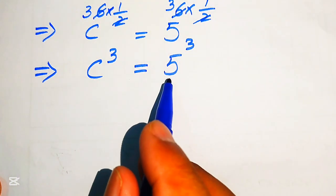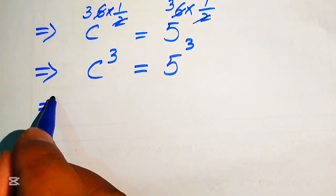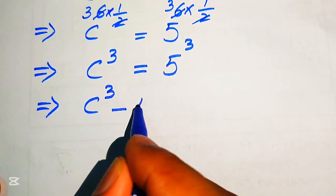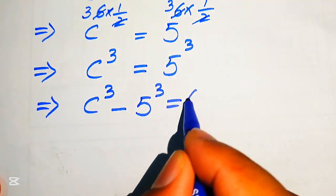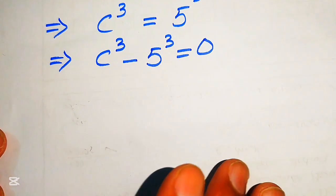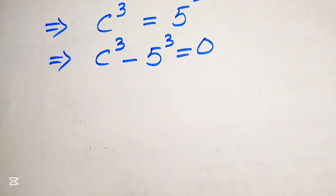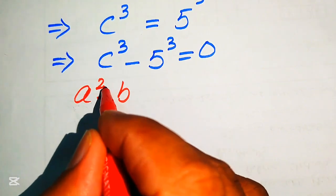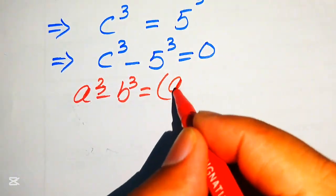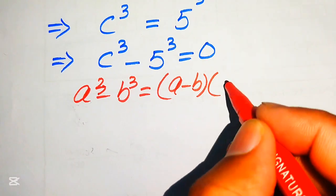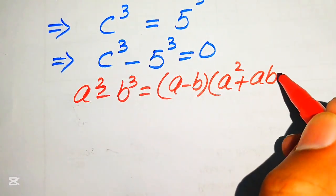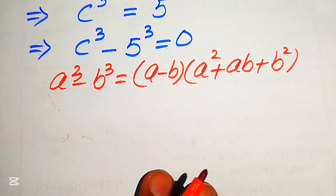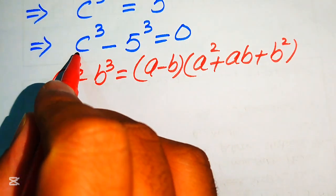In the next step we move 5 cubed to the left hand side, giving us c cubed minus 5 cubed equals 0. This equation becomes a cubic equation in the variable c. We can solve this cubic equation using the difference of cubes formula. You know that a cubed minus b cubed equals a minus b, times a squared plus ab plus b squared.